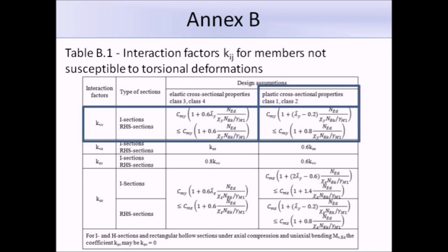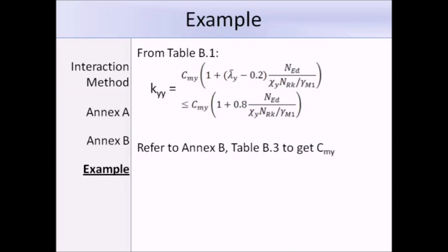This is the formula. We know lambda bar Y is 0.66, NED is 400 kN, and chi Y times NRK over gamma M1 equals NBYRD, which is 1469 kN. Gamma M1 is 1. All we need to get is the equivalent uniform factor CMY from table B.3 before we can work out KYY.